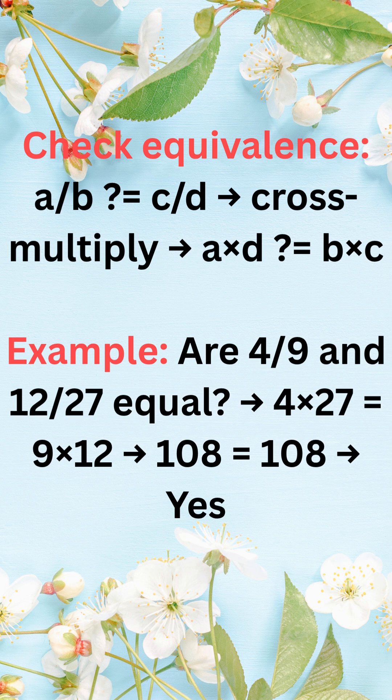For example, four over nine and twelve over twenty-seven. Four times twenty-seven equals nine times twelve, so they are equal.